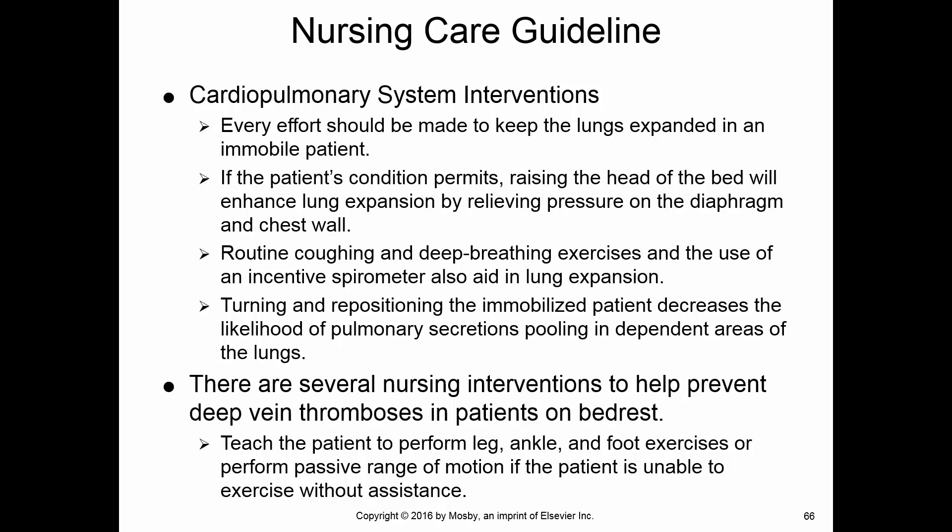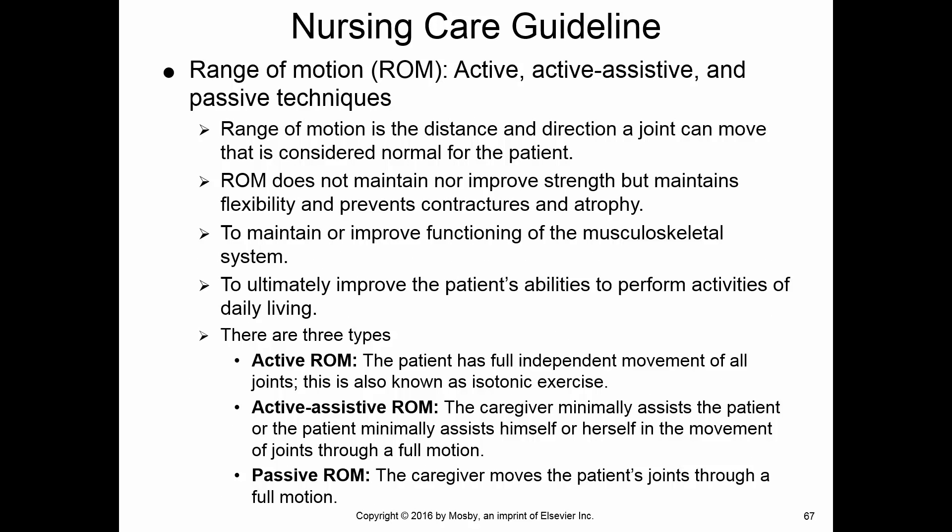Sometimes the patient can do range of motion activities themselves — that's called active range of motion. Sometimes they're not able to do it by themselves, so we move their joints and legs for them — that's called passive range of motion. Range of motion moves the joints and extremities to help prevent contractures, keep joints flexible, improve strength, and keep blood flowing.